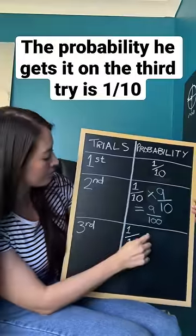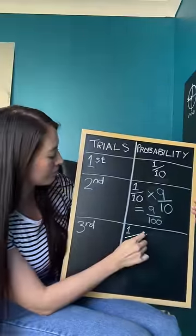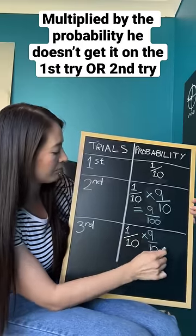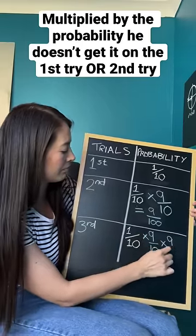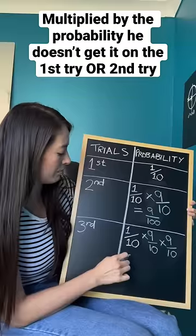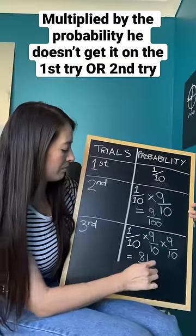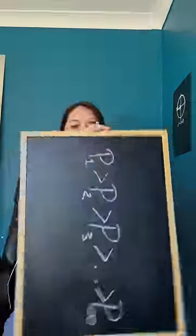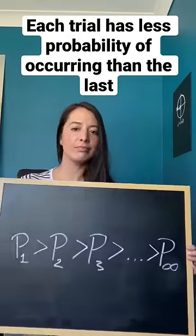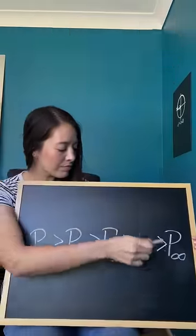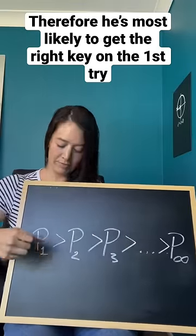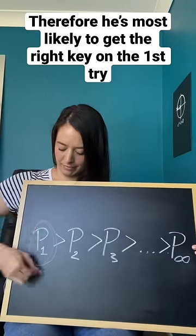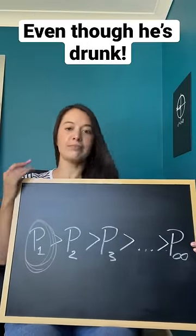The probability he gets it on the third try is one in 10, multiplied by the probability he doesn't get it on the first try, multiplied by the probability he doesn't get it on the second try. Each trial has less probability of occurring than the last. Therefore, he's most likely to get the right key on the first try, even though he's drunk.